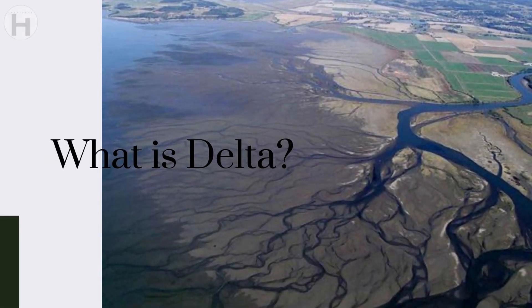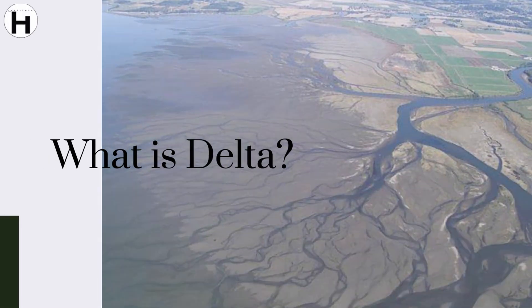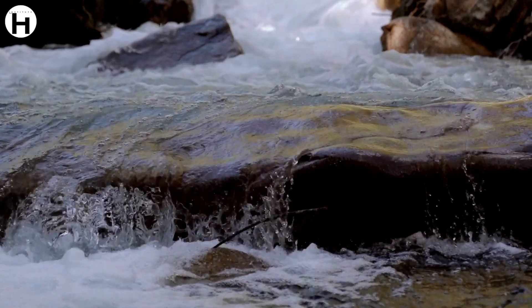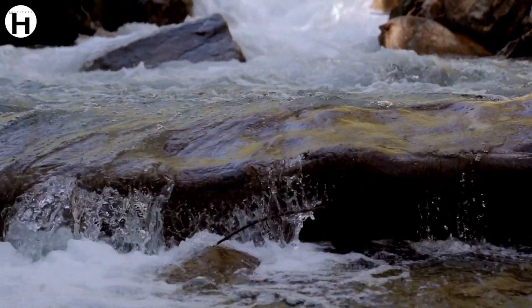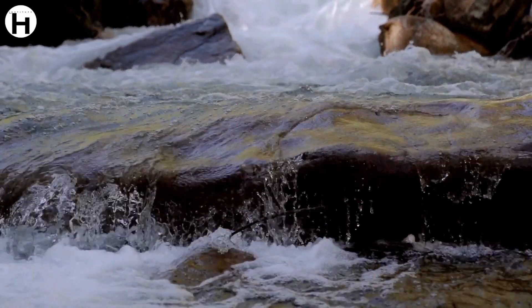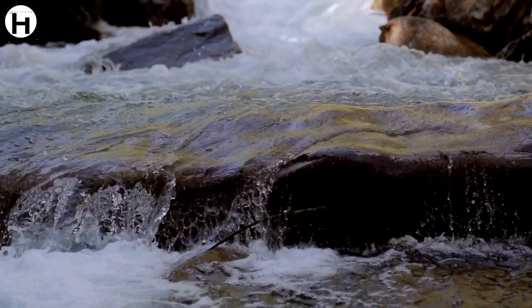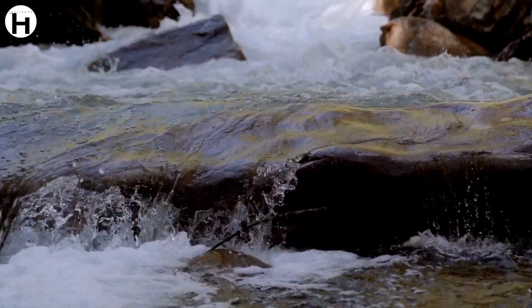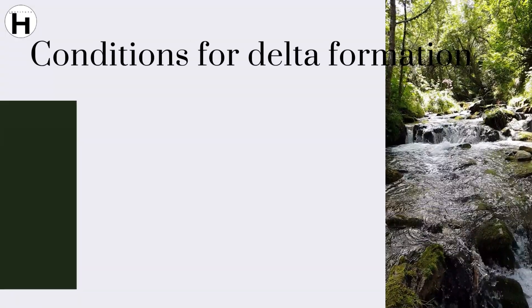Delta is a depositional landform, a fluvial feature, triangular in shape at the mouth of a river, where the river falls into a sea or a lake. There are numerous distributaries emanating from the mainstream that demarcate the extent of a delta.